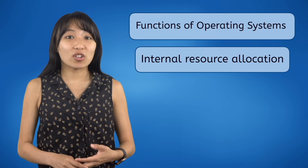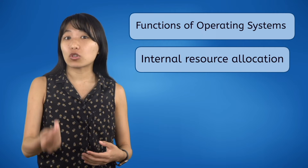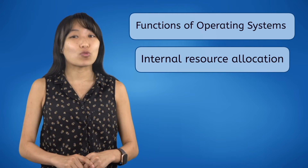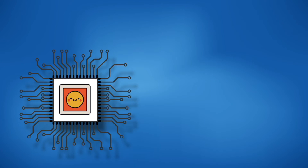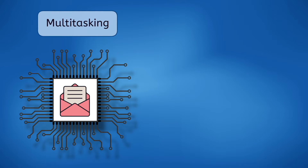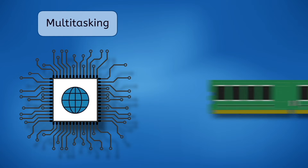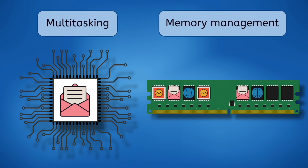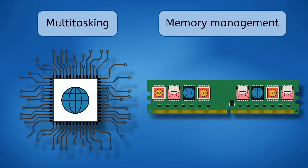Operating systems are also in charge of allocating internal resources, most importantly space on the CPU and RAM. Operating systems help the CPU manage multiple programs at the same time by telling it when to switch between programs, known as multitasking. Operating systems also section out the computer's RAM to programs when they need to use it, called memory management, so all the programs can store their data at the same time.